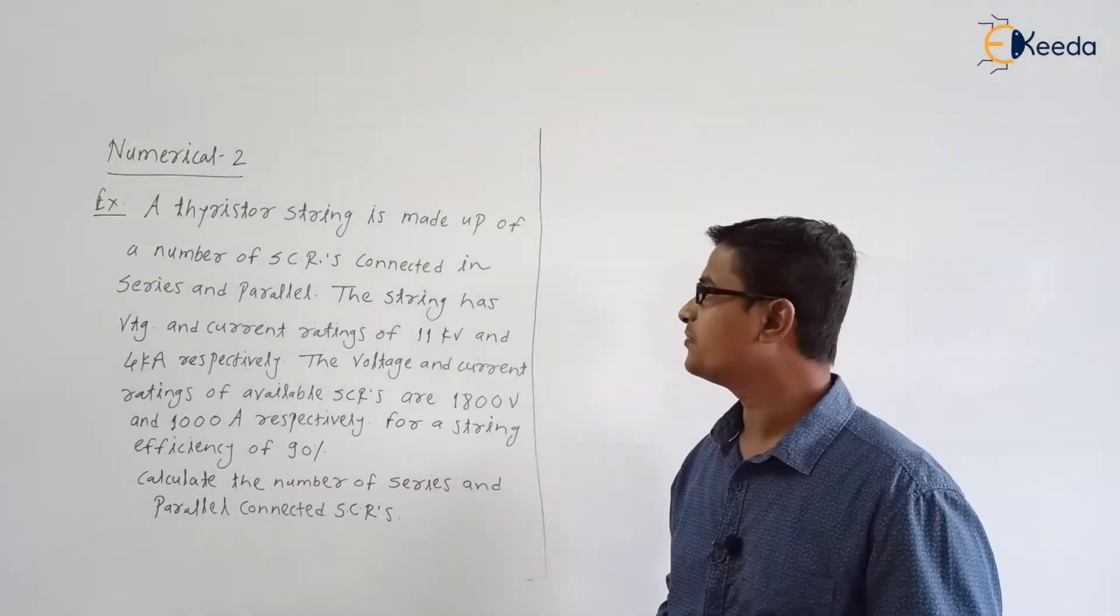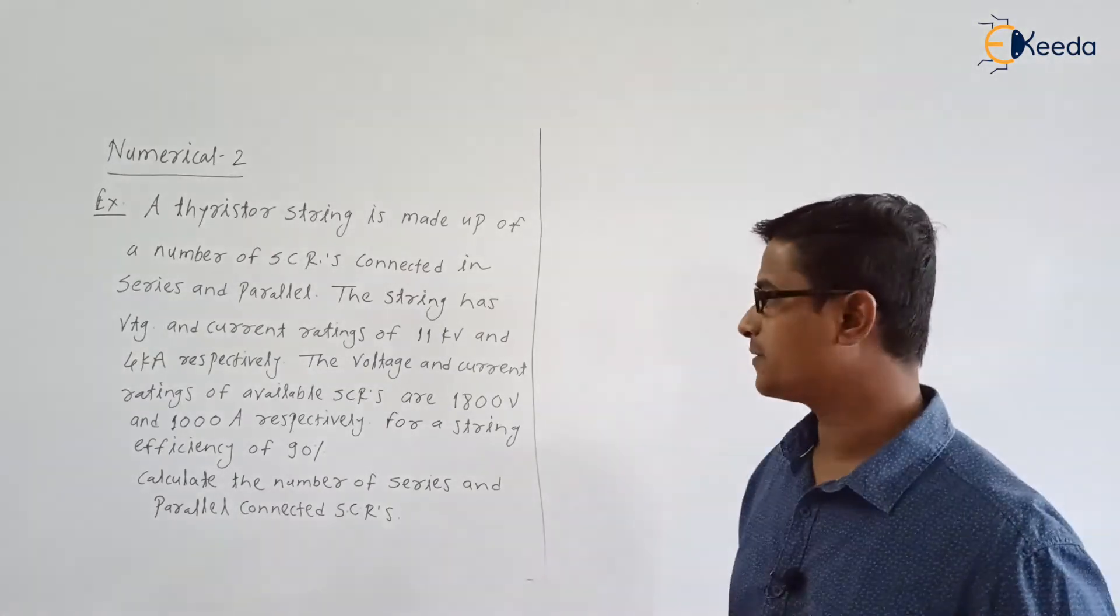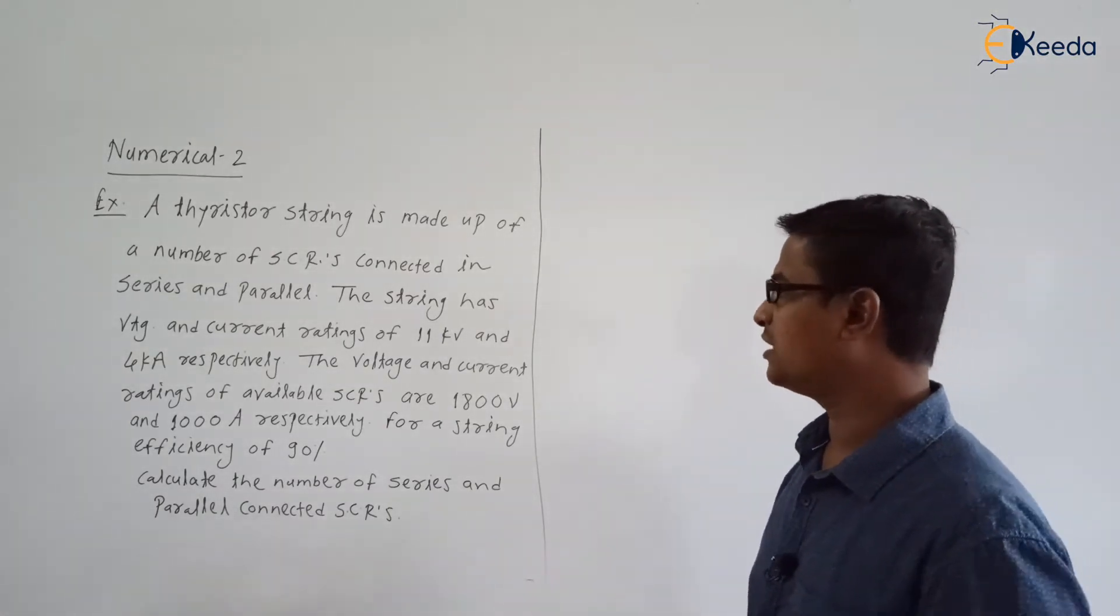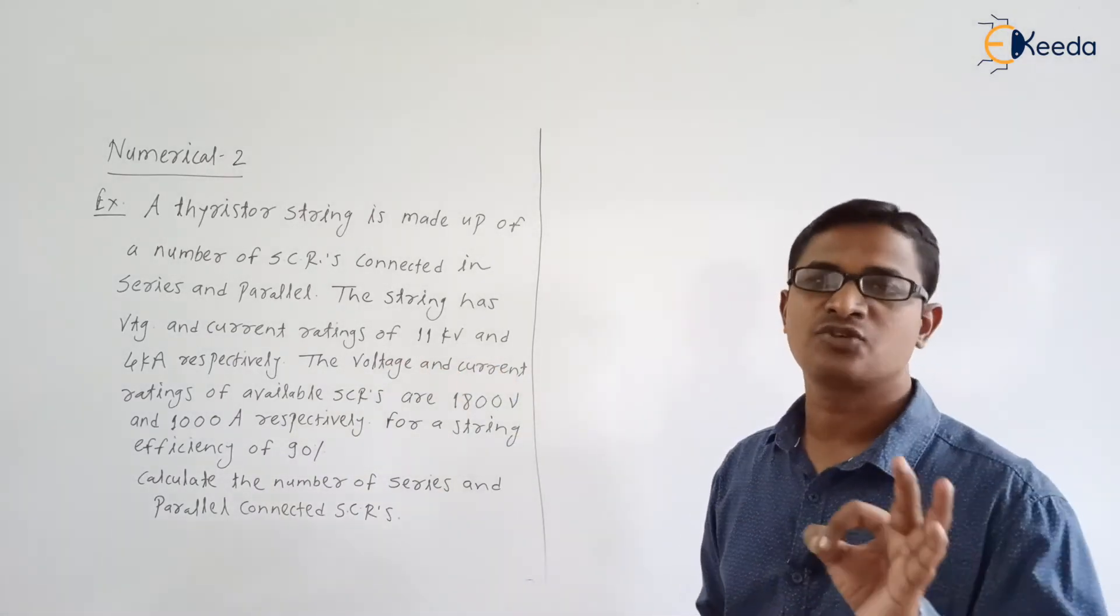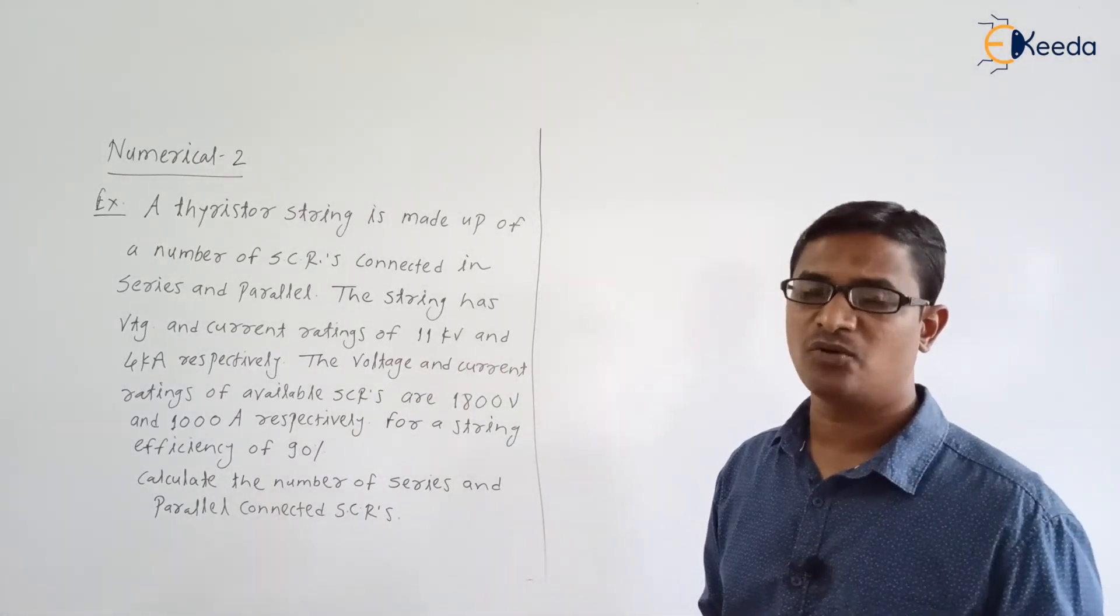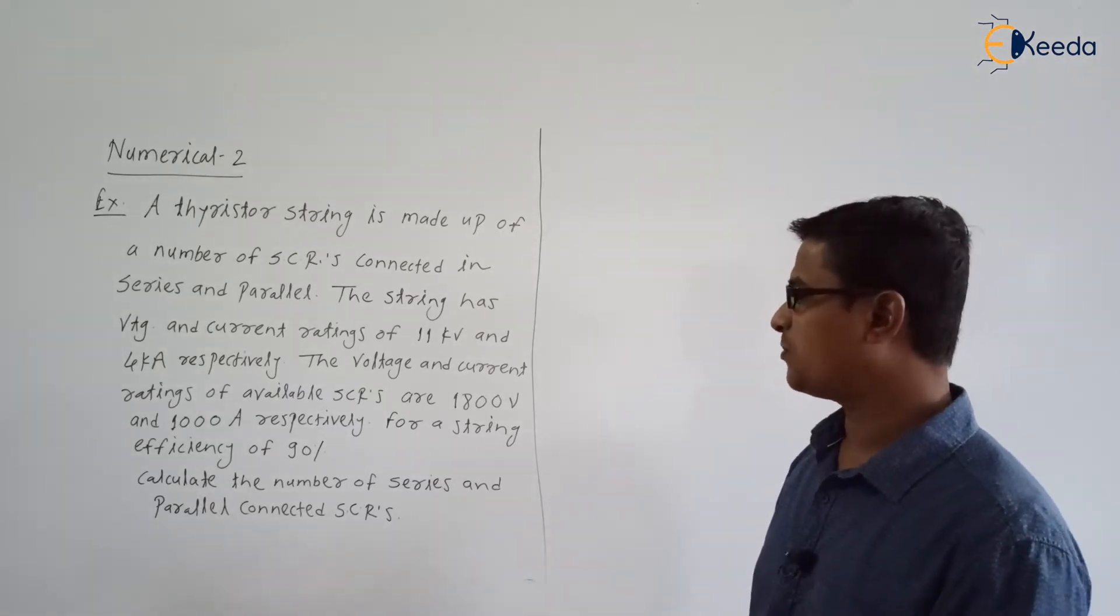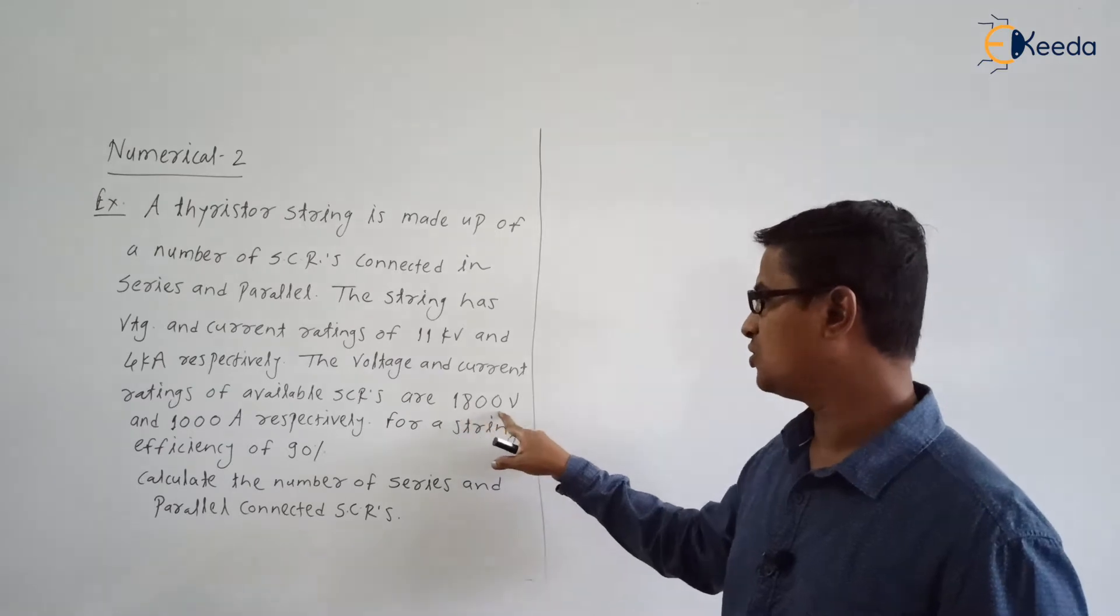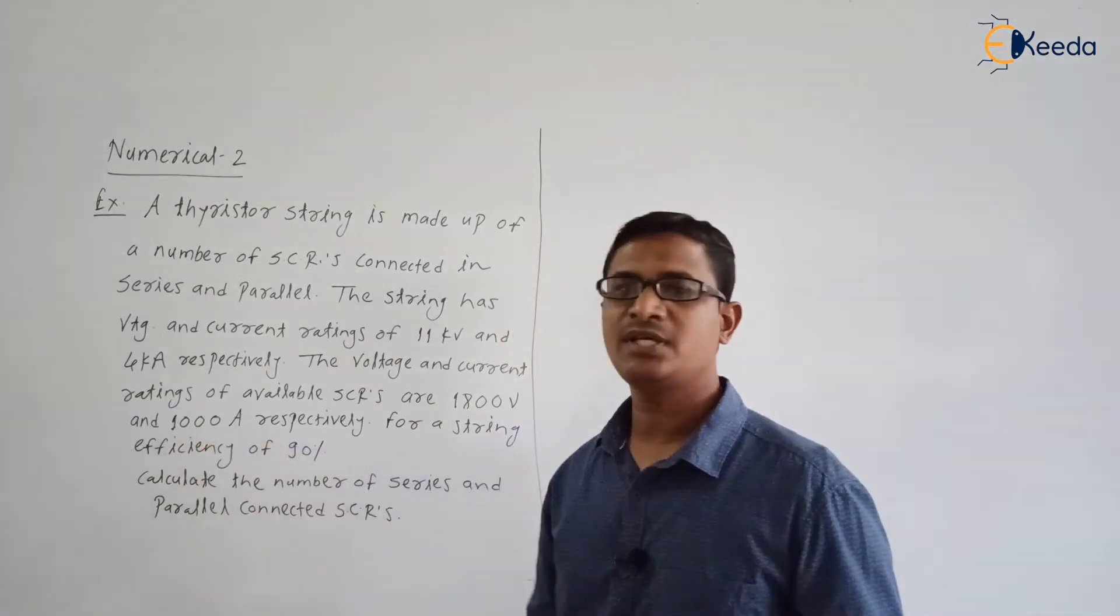A thyristor string is made up of a number of SCRs connected in series and parallel. The string has voltage and current ratings of 11 kV and 4 kA. The voltage and current ratings of available SCRs are 1800 volts and 1000 amperes.